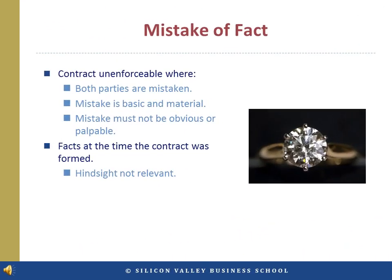A contract can be voidable as a result of mutual mistake of fact. If both buyer and seller believe the stone in the ring is diamond but it turns out to be fake, the court will not enforce the contract to sell the ring. However, if the stone is a diamond but is not worth the price of the sale, the court will enforce the contract. A mistake can void a contract only if the mistake of the subject matter was sufficiently fundamental to render its identity different from what was contracted, making the performance of the contract impossible.